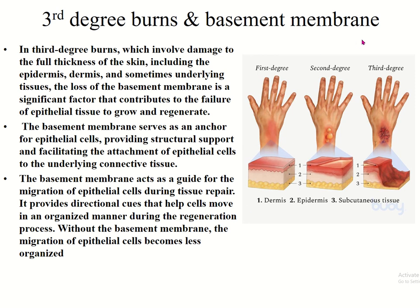In third-degree burns, which involve damage to the full thickness of the skin including the epidermis, dermis, and underlying tissue, the loss of the basement membrane is a significant factor contributing to the failure of epithelial tissue to grow and regenerate. The basement membrane acts as a guide for migration of epithelial cells during tissue repair, providing directional cues. Without the basement membrane, cell migration becomes less organized.